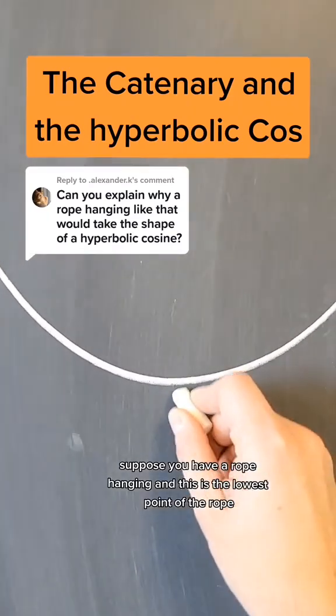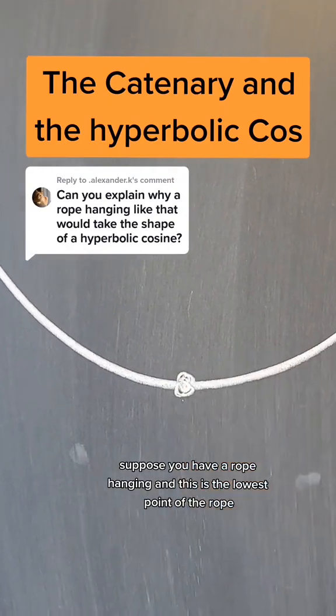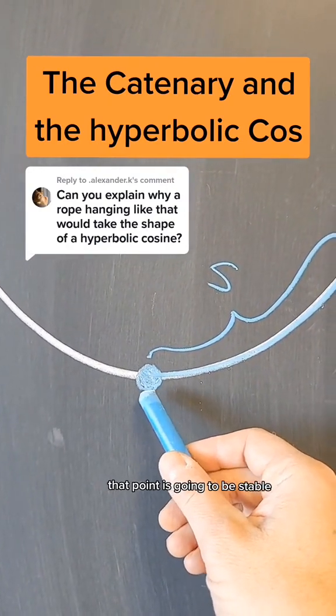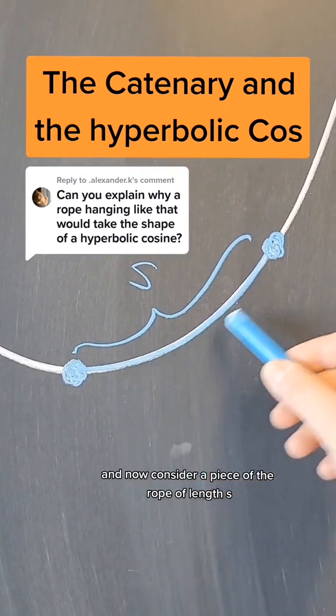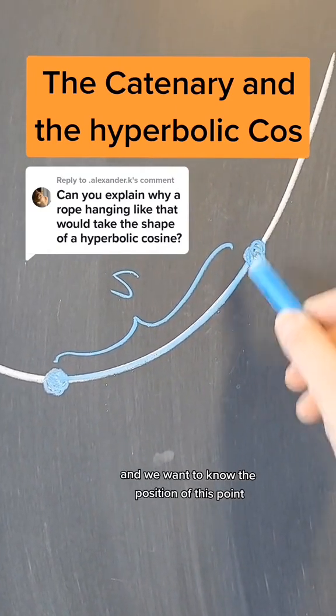Suppose we have a rope hanging and this is the lowest point of the rope. That point is going to be stable. Now consider a piece of the rope of length S and we want to know the position of this point.